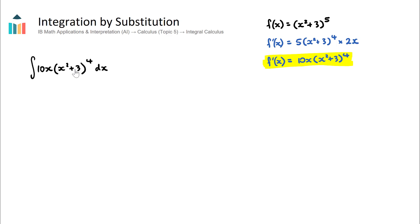We know the answer should be (x² + 3)⁵ + c. The key is to recognize that an integration by substitution question has some term in the integral whose derivative also appears somewhere in the integral. Here, (x² + 3) has derivative 2x, and 10x at the front is just 5 × 2x. Once we notice a term and its derivative both present, we know it's definitely integration by substitution.